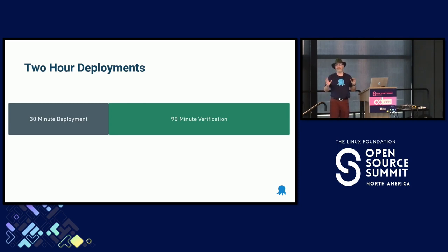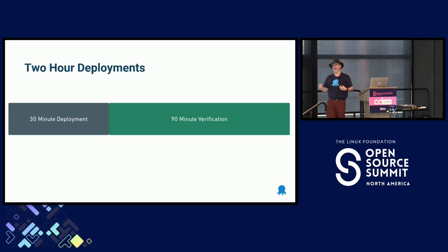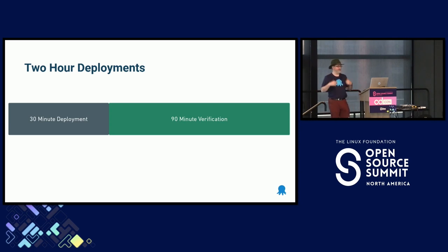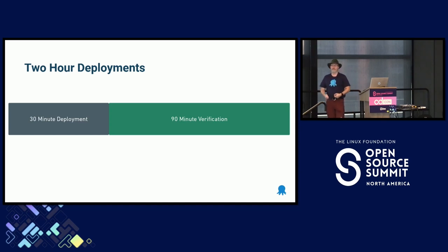We had over 5,000 different database objects that we were responsible for. Our deployments, while they were really two hours, were really 30 minutes of deployment time, then 90 minutes of verification and fixing everything. This is because we had so many different objects, and I'll get into the reason why we had to spend so much time verifying. But at the end of the day, no matter how much time we spent verifying, the tricky thing was we always missed something.